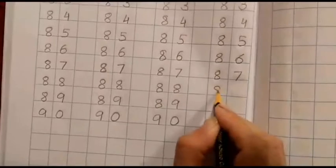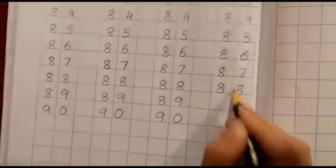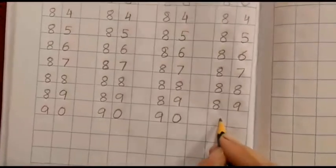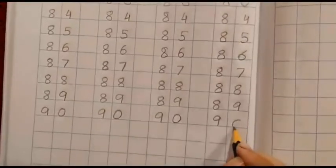Once more, we are going to write here. 8, 8, 88, 8, 9, 89, 9, 0, 90.